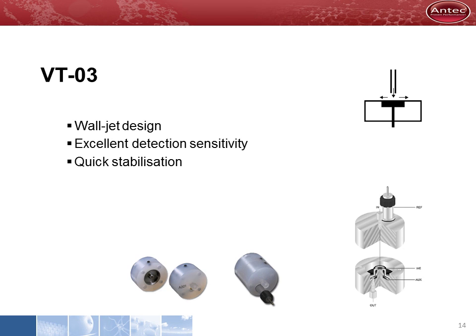The VT-03 is a wall jet cell. It has excellent detection sensitivity and a short stabilization time. It uses a polymer spacer and has an effective cell volume down to 5 nL. It is therefore compatible with standard, micro and capillary LC.